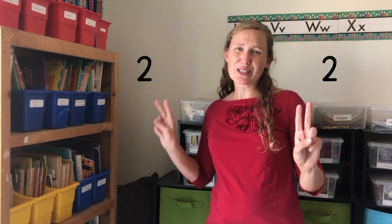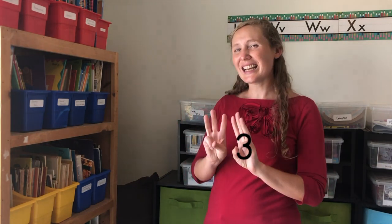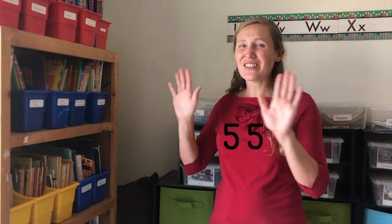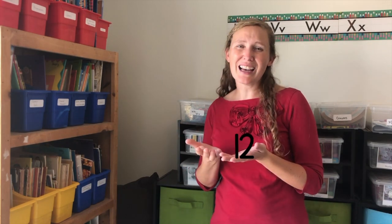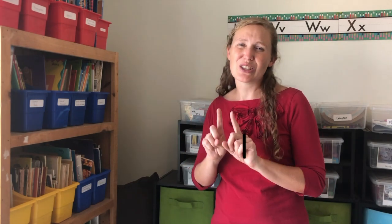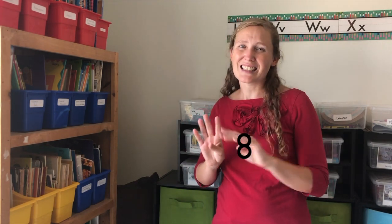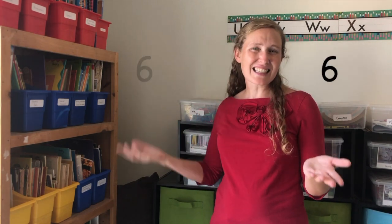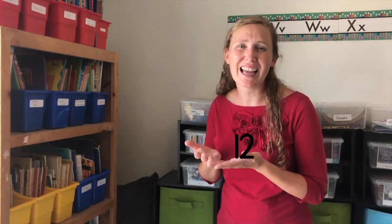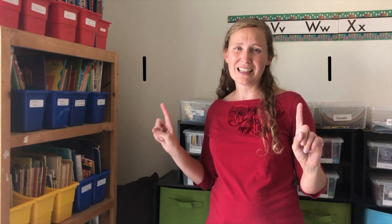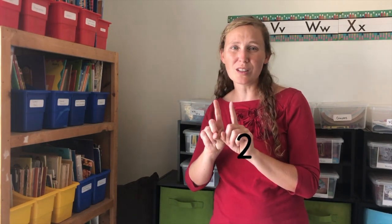Let's start with a rhyme. One and one is two, two and two is four, three and three is six, now let's do some more. Four and four is eight, five and five is ten, six and six is twelve, let's do that again. One and one is two, two and two is four, three and three is six, now let's do some more. Four and four is eight, five and five is ten, six and six is twelve, now we're at the end. Did you know you could take two parts, like one and one, and put them together to make a whole — two?